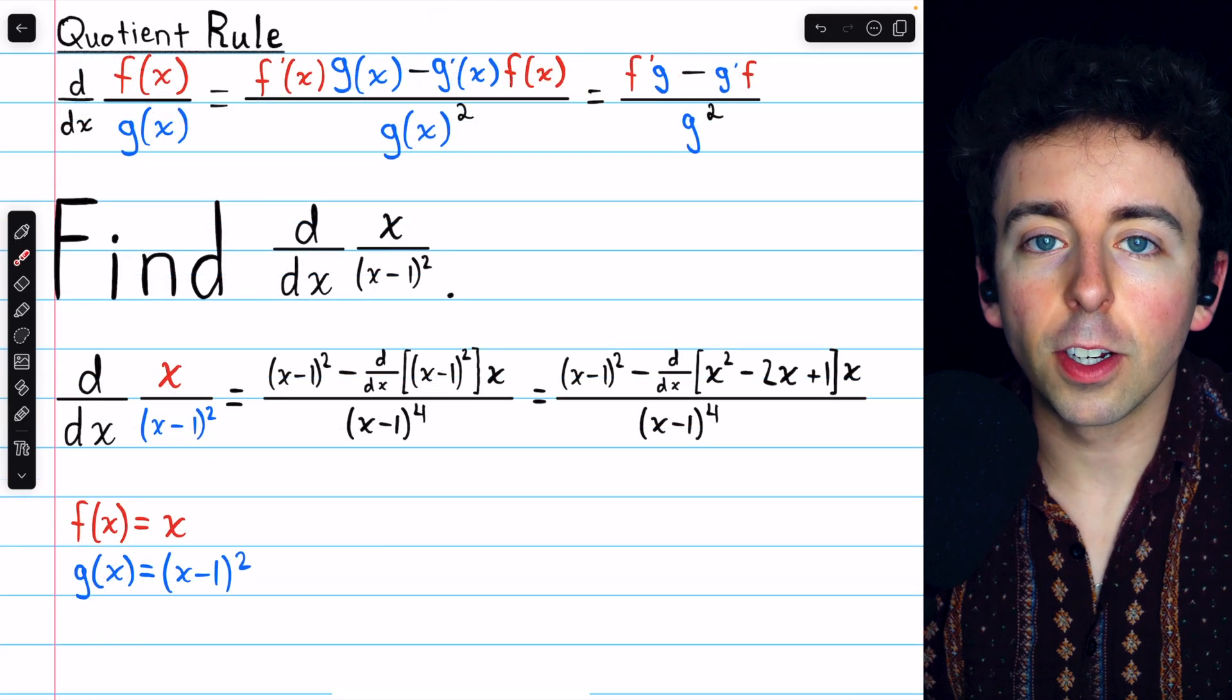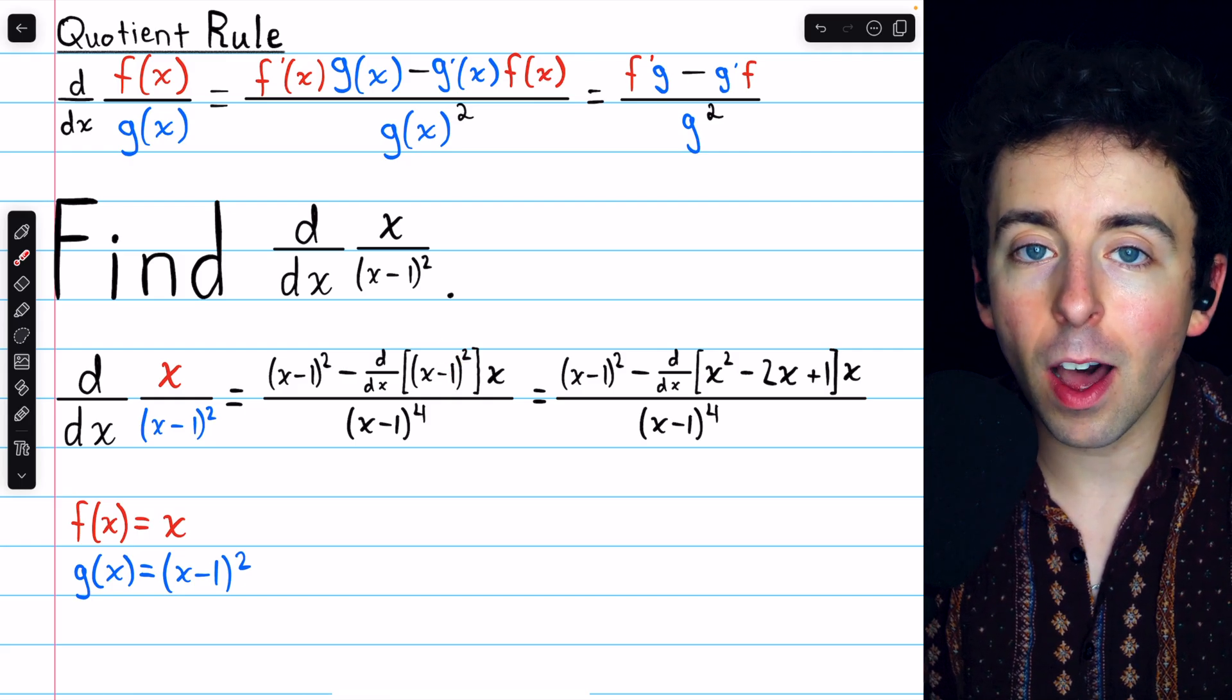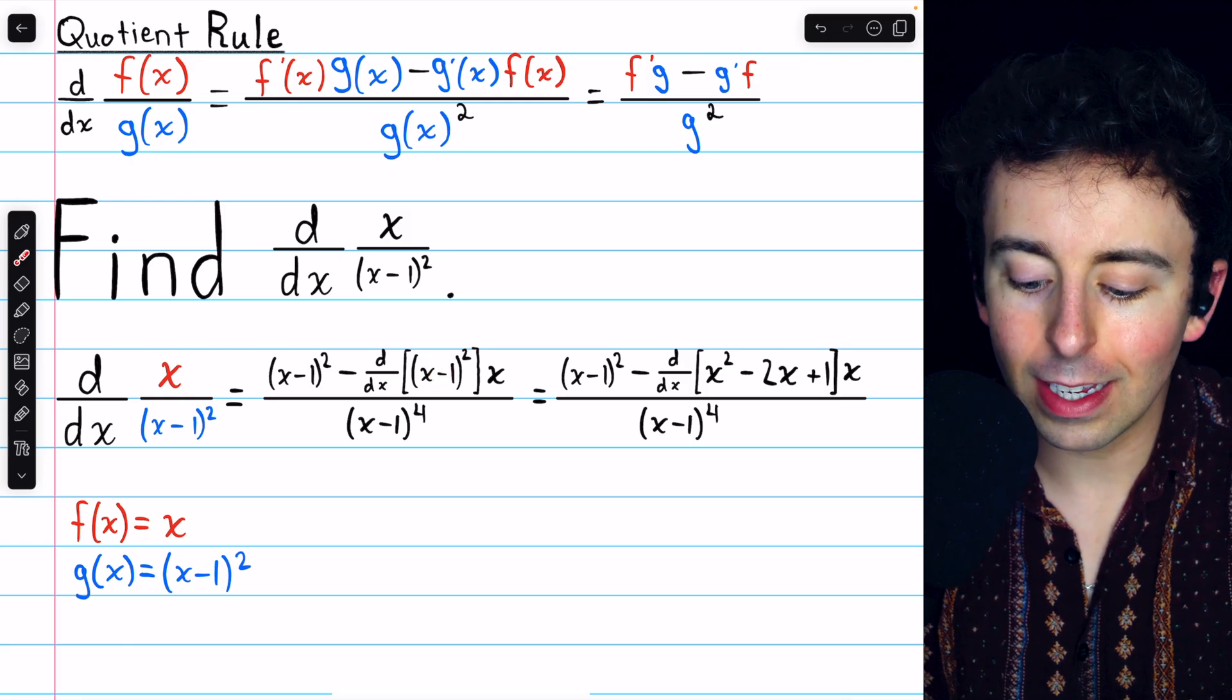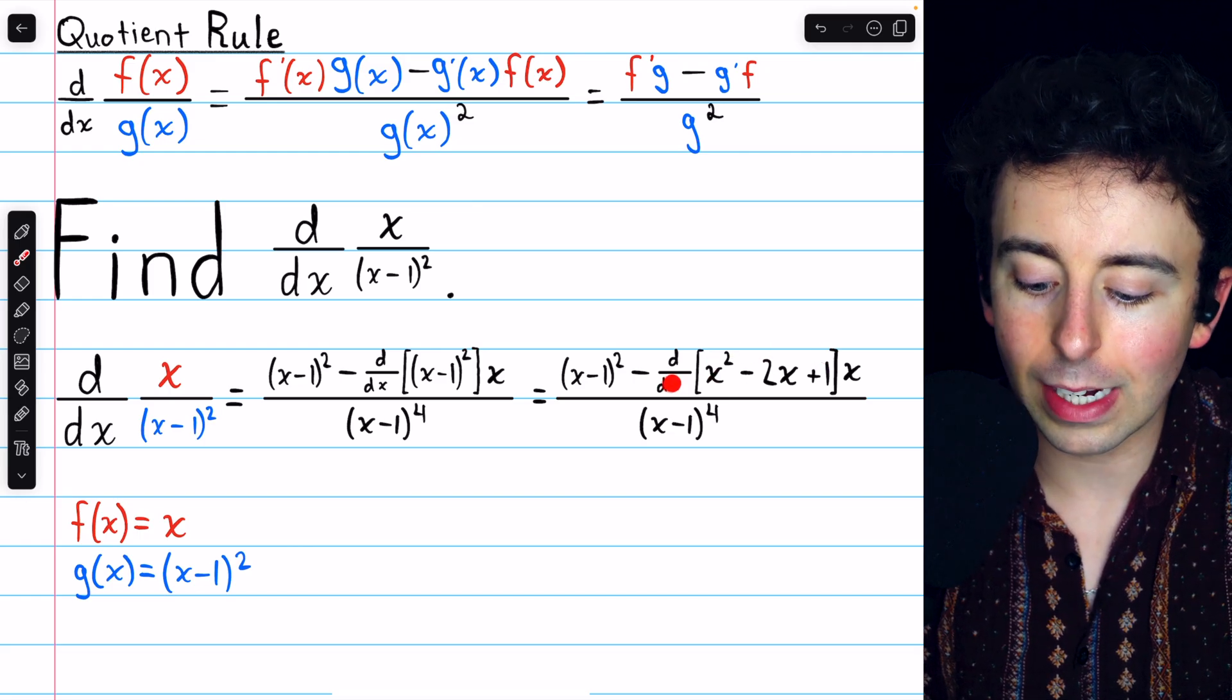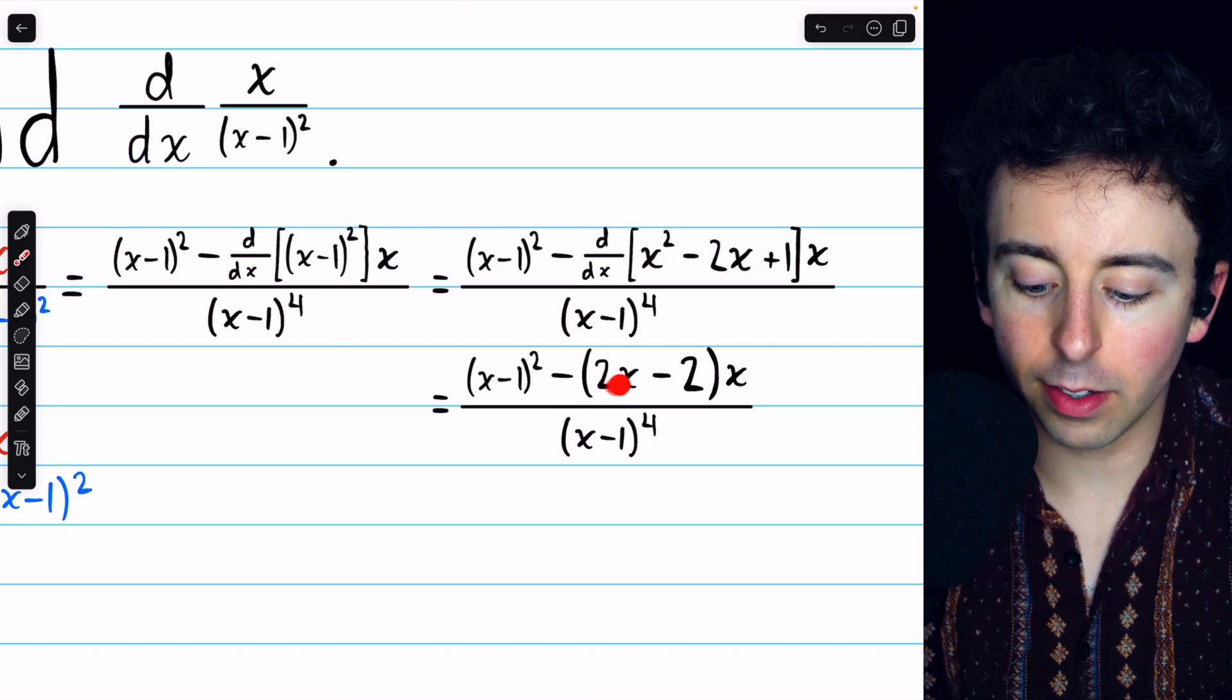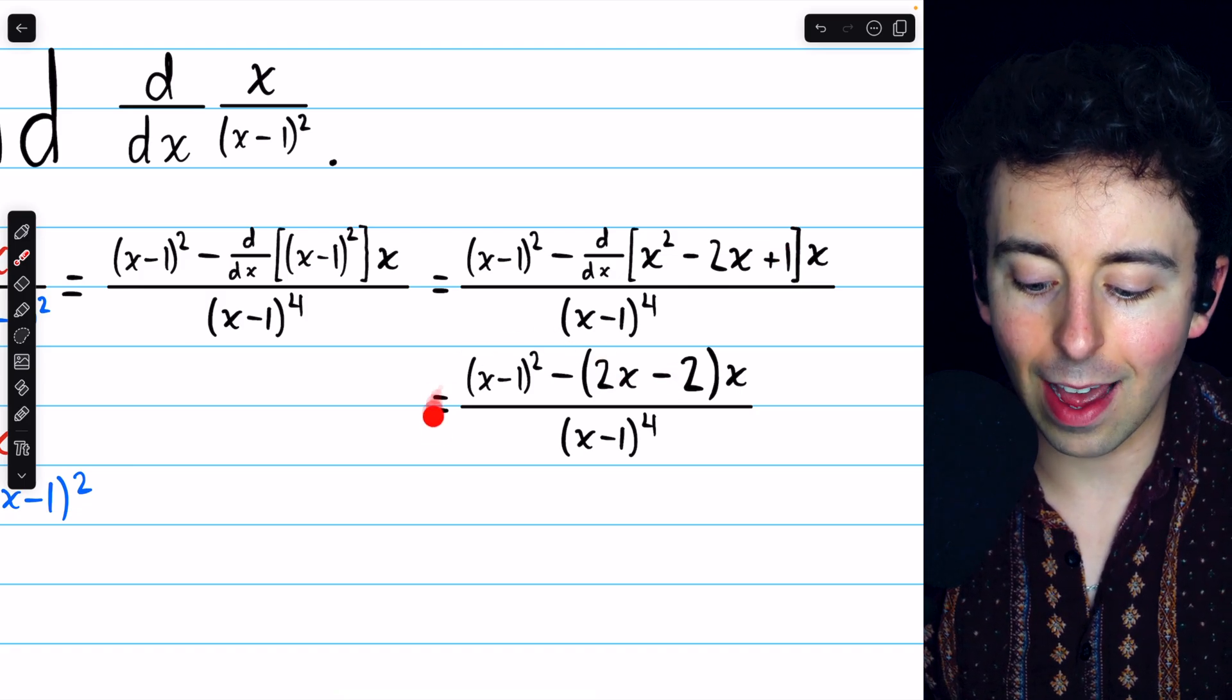All right, continuing with the calculation, if you happen to know the chain rule, then you can use that to take this derivative very easily. If not, then we're going to have to expand this so that we can use the power rule. x minus 1 squared is x squared minus 2x plus 1. And so this is what we need to take the derivative of in the numerator. And the power rule makes that straightforward enough. The derivative of x squared is 2x. The derivative of negative 2x is negative 2. And the derivative of 1 is 0. So we have this.